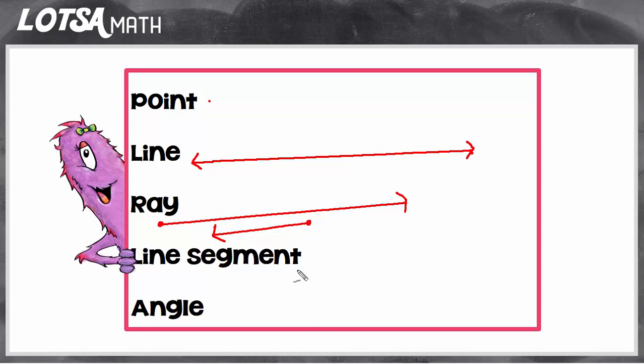Another geometric figure is a line segment. A line segment is exactly what we think of when we usually hear the word line, because a line segment has an actual start and stop.